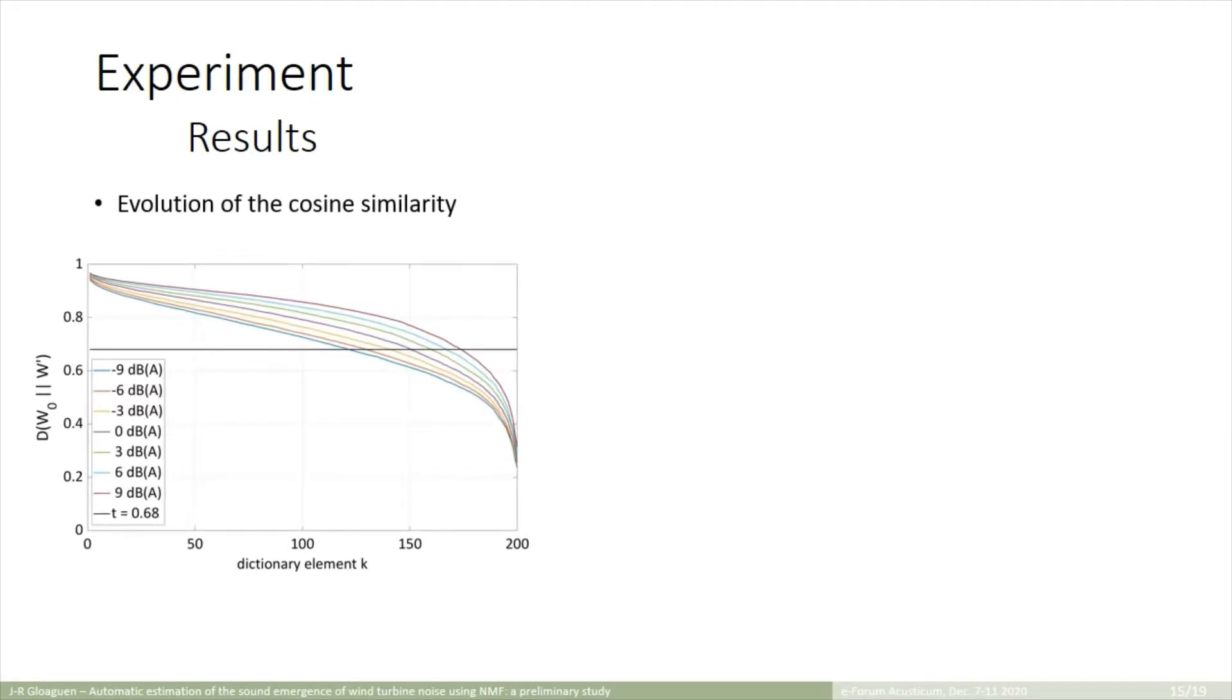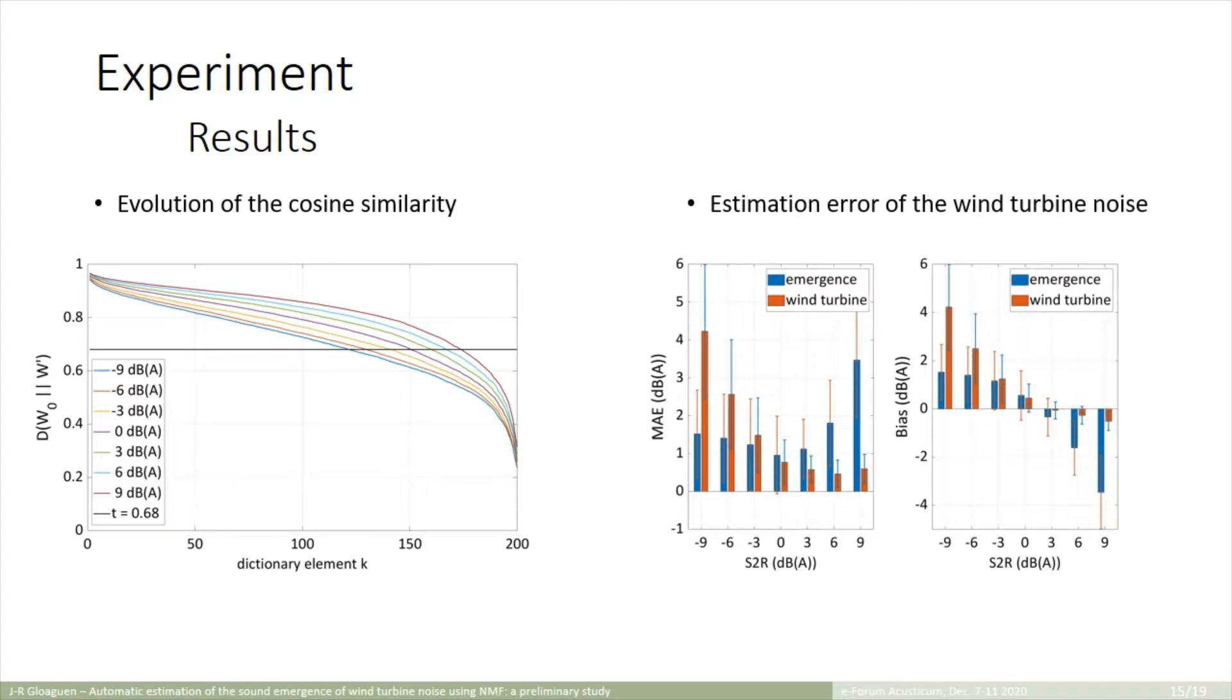We can detail this behavior by looking at the cosine similarity on the left, sorted in decent order, and on the right, the mean absolute error and the bias. In blue is still the result for the emergence, and in red, the error on the wind turbine noise between the estimated and the exact sound level, as it is the direct output variable of NMF. We can conclude from these figures that when S2R is positive, the threshold value is too high, and miss some elements, which produce a small underestimation of the wind turbine noise, less than 1 dBA. But, as the S2R is positive, the estimation of the emergence is here very sensitive, which provokes these high errors on the emergence.